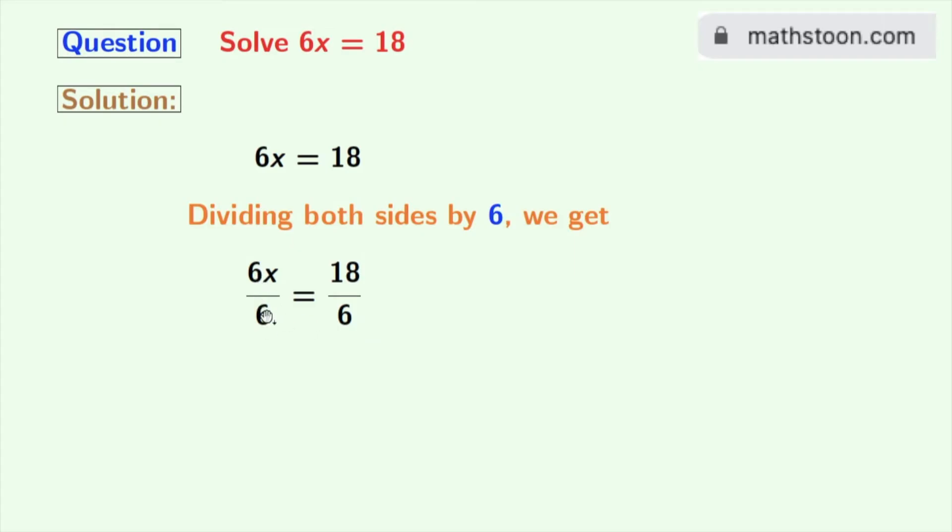In the left hand side, see that we have 6 in both the numerator and the denominator. So, it gets cancelled. And we are left with x in the left hand side.